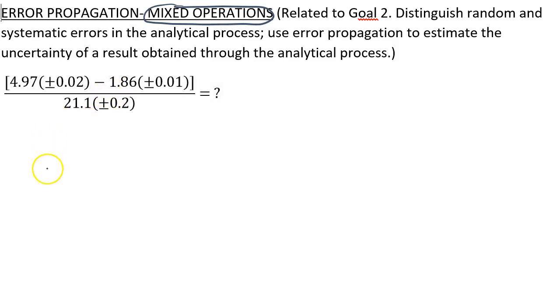So we'll just have to follow the rules for error propagation as we go. In the numerator, when I take 4.97 and subtract 1.86, I get 3.11 plus or minus some error, which I'm going to call E1. And then I'm going to have to divide that by 21.1 plus or minus 0.2.